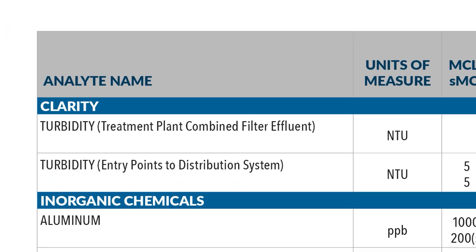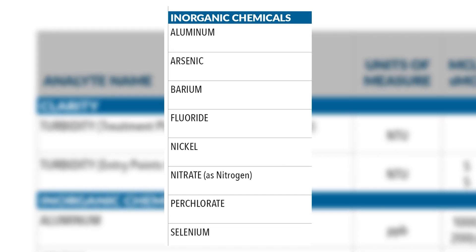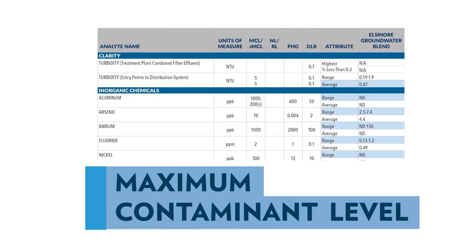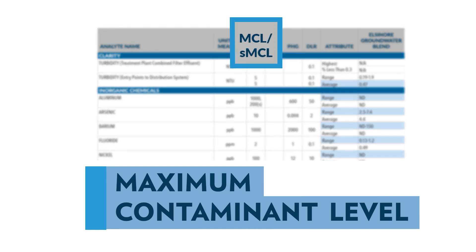Analyte: this column lists the substances tested in your water, such as aluminum, fluoride, or selenium. MCL, or Maximum Contaminant Level, is the highest level of a contaminant allowed in drinking water. It's set by regulatory agencies to ensure safety.